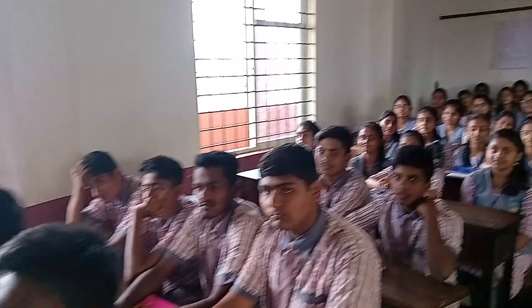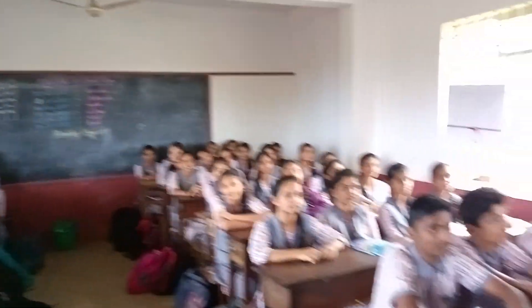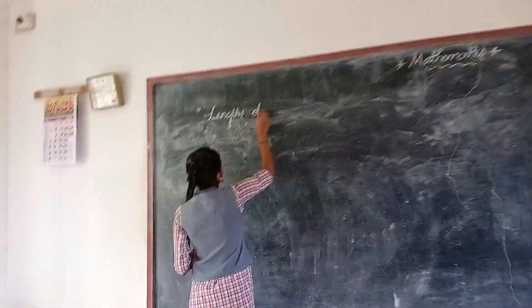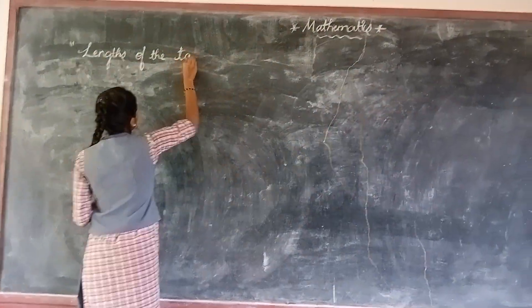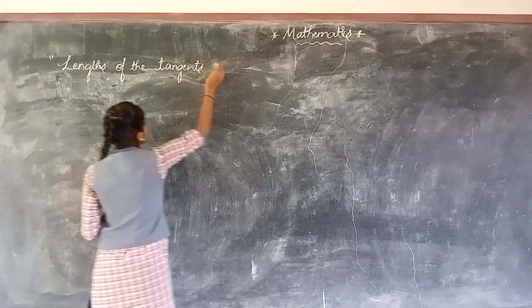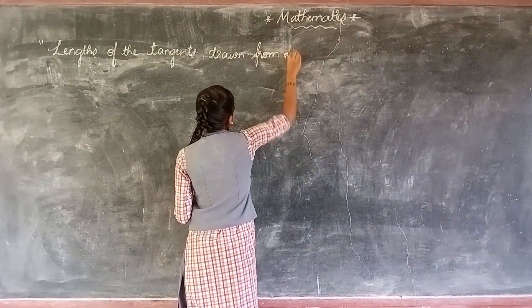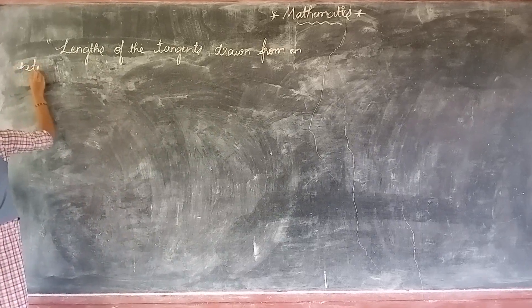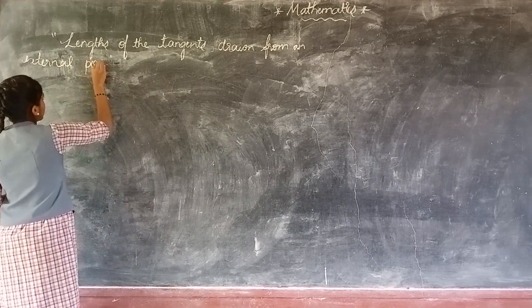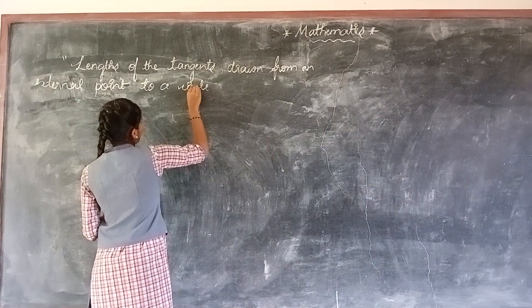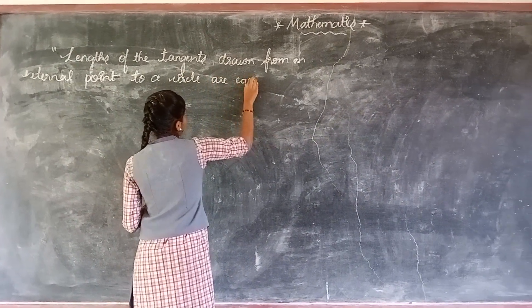Hello everyone, today I am going to explain the circle theorem, which states that the length of the tangents drawn from an external point to a circle are equal.